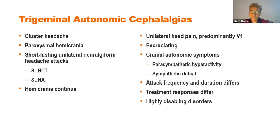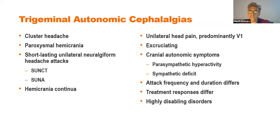There are four conditions grouped as TACs. Cluster headache is the prototype and by far the commonest; the others — paroxysmal hemicrania, short-lasting unilateral neuralgiform headache attacks (SUNHA), and hemicrania continua — are relatively rare. We can often differentiate them because they differ in attack frequency and duration, though there is overlap. These conditions are highly disabling, causing excruciating pain, so jumping in with the right treatments for the right patient is absolutely critical.